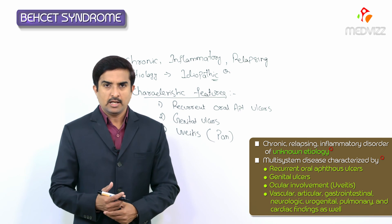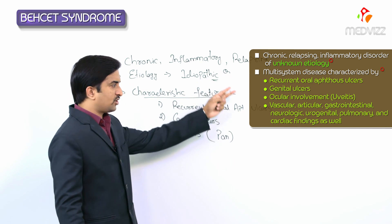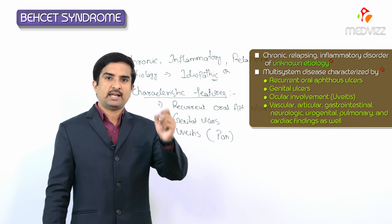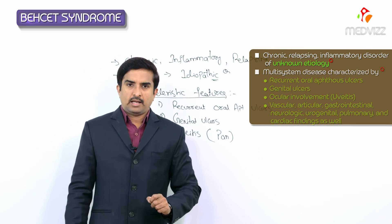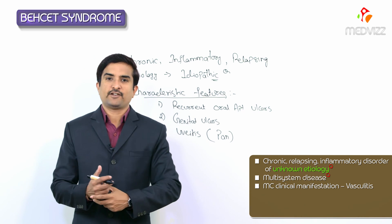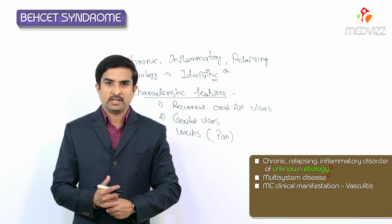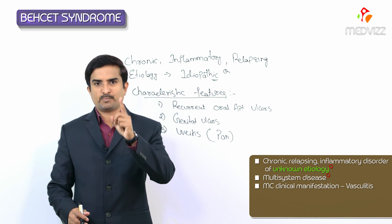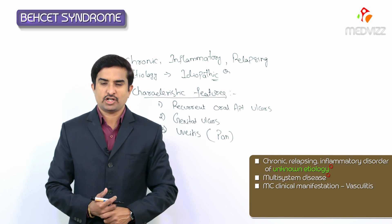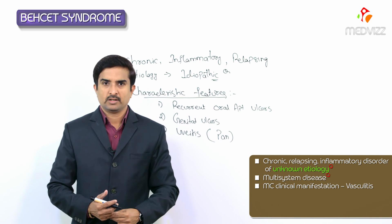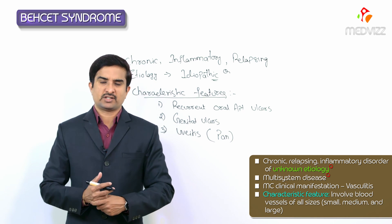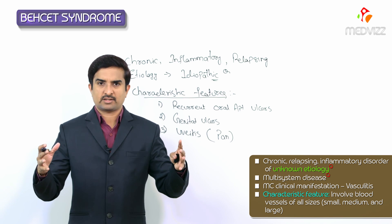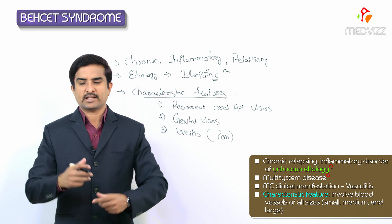There may also be vascular involvement, articular involvement, involvement of the gastrointestinal system, neurologic, urogenital, pulmonary, and cardiac findings. Because of all these manifestations, we call it a multi-system disease. The most important clinical manifestations of Behçet's syndrome are especially due to vasculitis, which is responsible for the key clinical features.